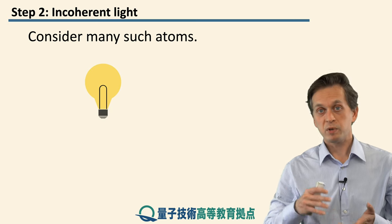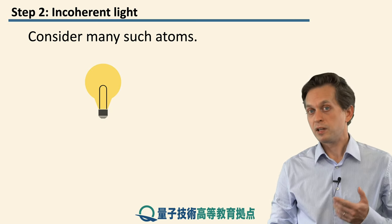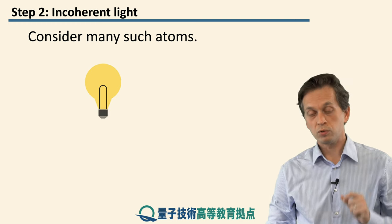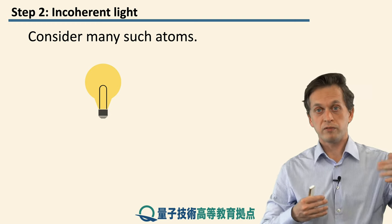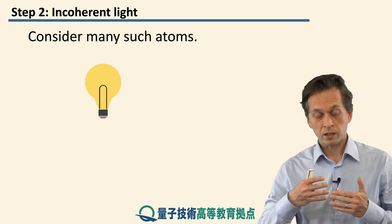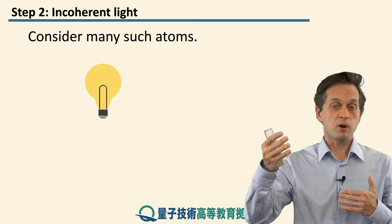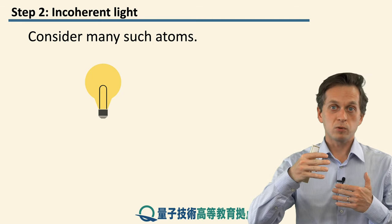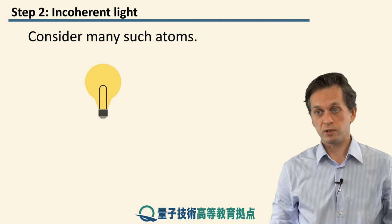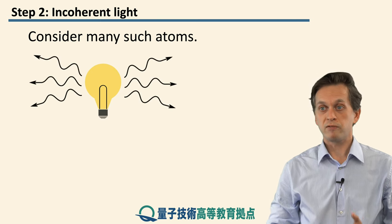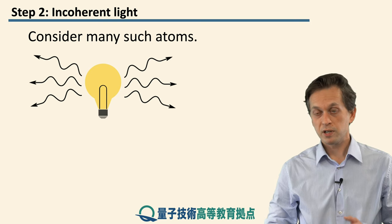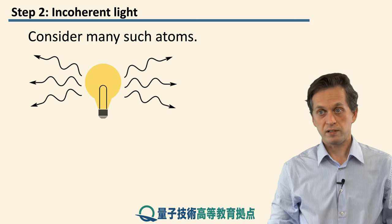All those atoms inside the filament become excited. But this time, the atoms in the filament don't just have a simple two-level structure — there are many different levels. As you give it thermal energy, these atoms become excited to higher levels, some to slightly lower levels, so when they spontaneously emit, they give out light of different frequencies. Again, this light is traveling in all possible directions, and because the emissions happen at different times, the light has different phases.